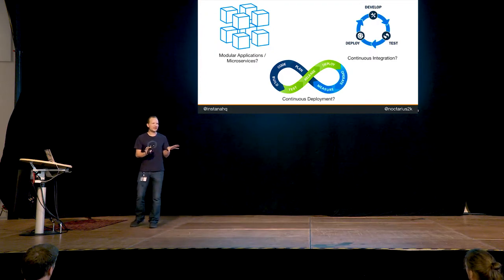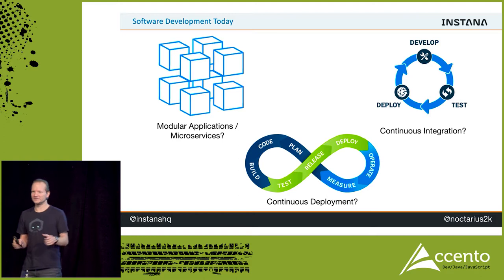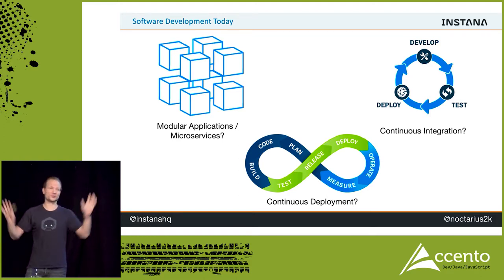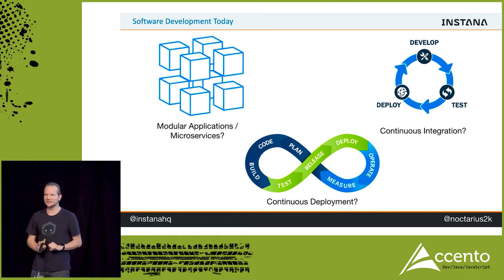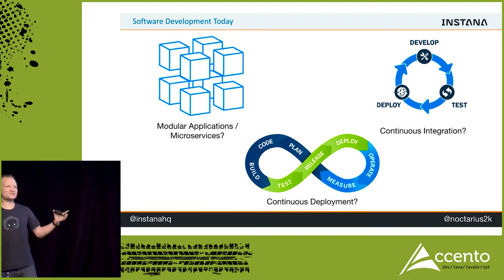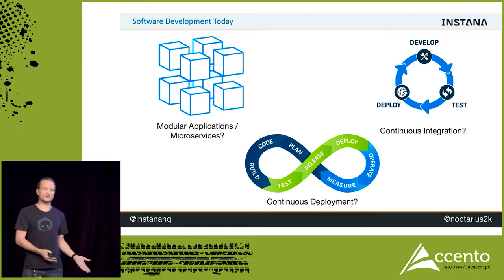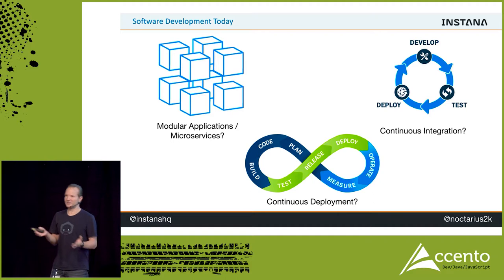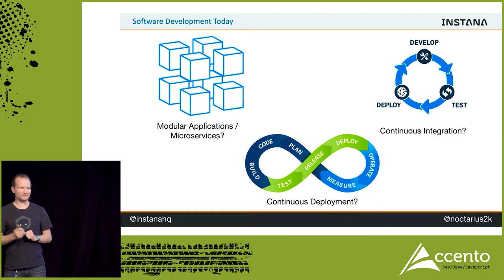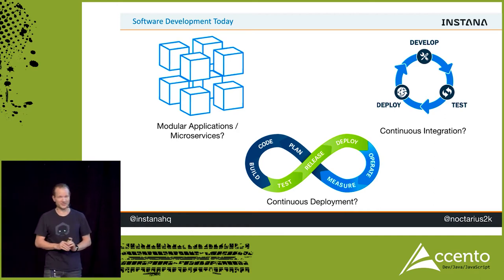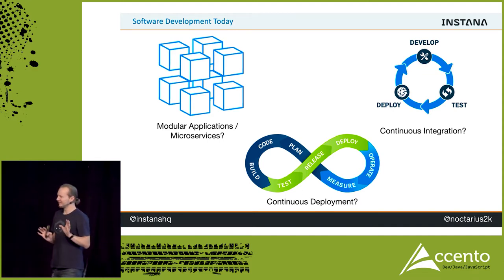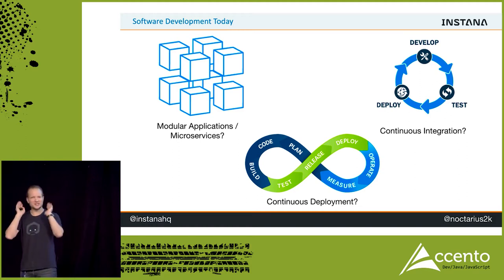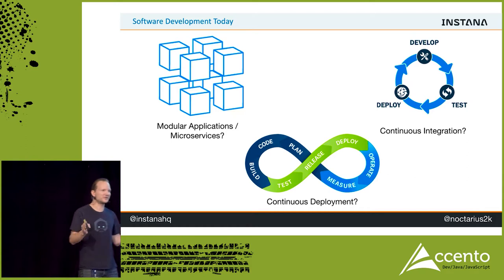When people talk about continuous deployment they ask: what happens if something breaks? First of all, we have continuous integration, so most failures should already be stopped before being deployed to production. And if something really bad happens, like a Facebook feature isn't loading, we just fix it. Or if we can't fix it right away, we roll back to an older version - it's literally that simple. Small changes are simpler to fix and simpler to find errors than a major deployment every three to four months.